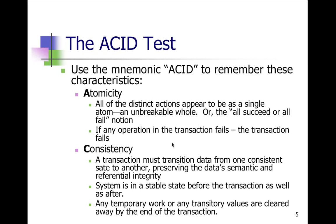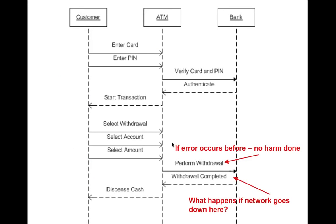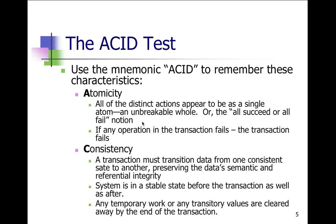Atomicity: all of the distinct actions appear to be a single atom — one unbreakable whole. When you do a withdrawal from an ATM machine, there are a couple of different tasks that are part of this concept called the transaction, but it all seems to be one. The all-succeed or all-fail notion exists. If any of the operations fail, then the transaction must fail and everything must be reverted backwards, which is good in terms of fault recovery.